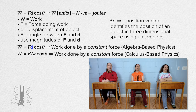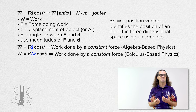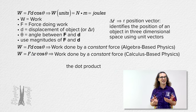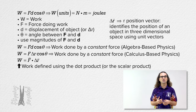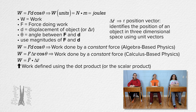So we are just replacing d with delta r? Yes. Also, now that we are doing calculus-based physics, work done by a constant force is defined using the dot product, which is also called the scalar product, because the dot product is a scalar. In other words, work done by a constant force equals the dot product of the force doing the work and the displacement of the object. Can we review the dot product? The scalar product of vector a dot vector b equals a times b cosine theta. Therefore, work done by a constant force equals the dot product of force and displacement, which equals force times displacement times cosine theta, just like we defined before.